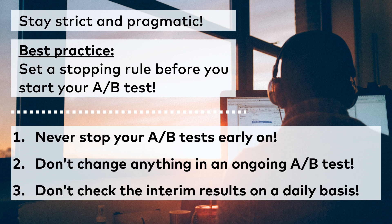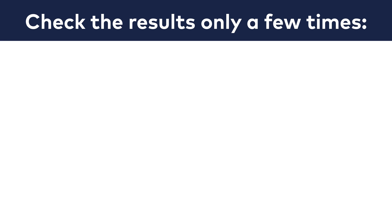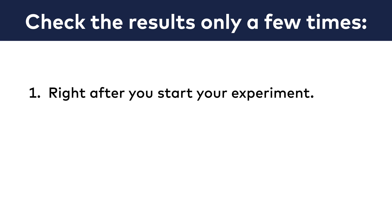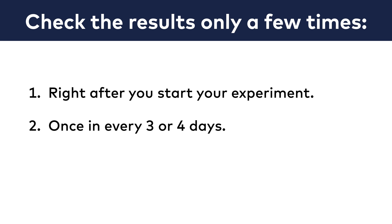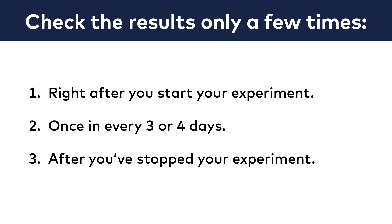The third typical mistake: checking the interim results of the experiment on a daily basis. I get it — running an A-B test is exciting. Still, the best practice is not to check your A-B test results every day. Ideally, you will check it only a few times while it's running: right after you start, just to confirm tracking and conversion data is being collected; then once every 3 or 4 days just to make sure nothing's broken; and then only after you have stopped your experiment. The more times you check your experiment, the more opportunity you give yourself to be influenced by your emotions — and you want to avoid that.